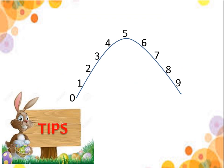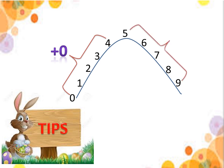Look at the important tips of rounding off. The same diagram as just now — diagram of a hill, with 5 on the top. For digits 0, 1, 2, 3, and 4, like the boy going up, we need to plus 0. For digits 5, 6, 7, 8, and 9, we need to plus 1. Please remember these important tips.